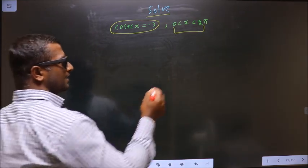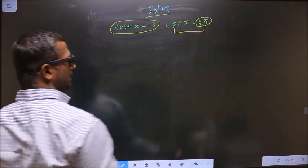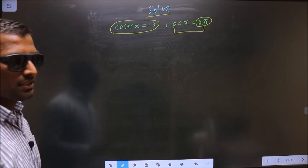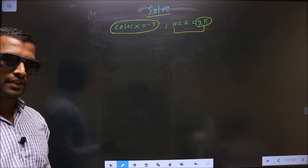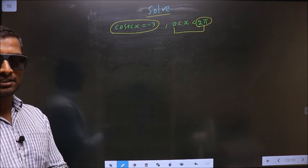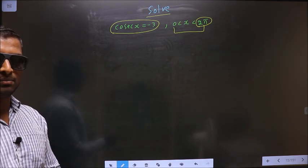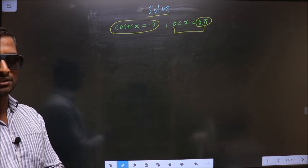Here the catch is you have 2π present here. That means you should get the answer in radians. For that, put your calculator in radian mode. I repeat, put your calculator in radian mode.